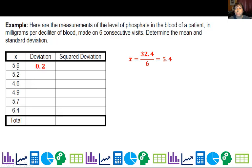I'm going to subtract 5.4 from every one of these points. So 5.6 minus 5.4 is 0.2. 5.2 minus 5.4 is negative 0.2. Don't forget your positives and negatives. And you keep going. And you can make sure you didn't make a mistake by adding these all up. If you get zero, you're fine.